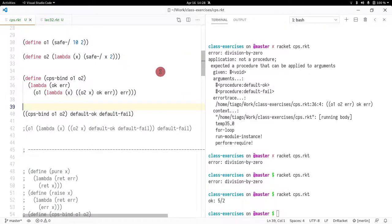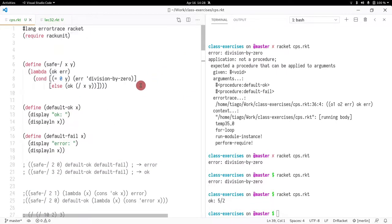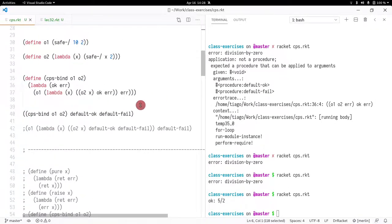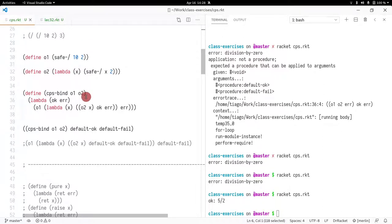So first thing is, I showed you the division, right, where I just returned something OK and returned something error. But I could do something a bit different. Assuming I already have this CPS bind, what I did here, I can actually make this more explicit and say divide ten by two. So I do safe division ten by two, and here do a lambda x, safe division x by two.